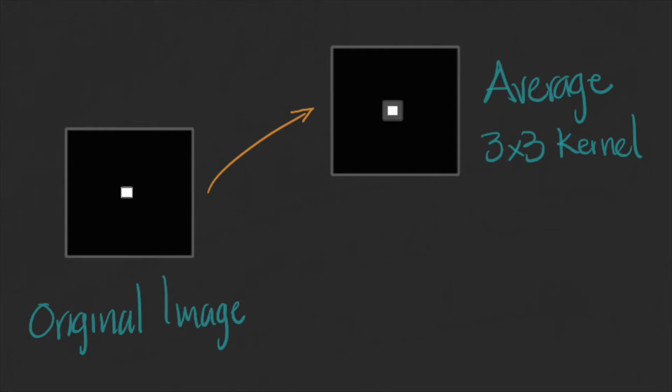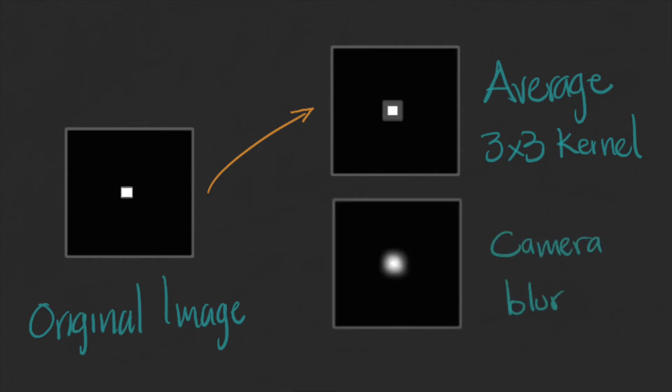We want a blurring process that converts a small bright dot into a circularly symmetric region of blur, brighter at the center than the edges and fading slowly to darkness. A good formal model to achieve this effect is the symmetric Gaussian kernel.